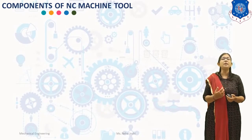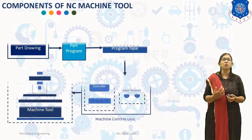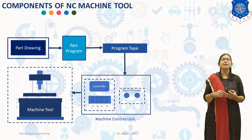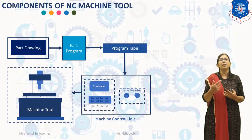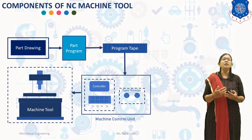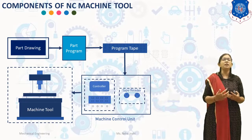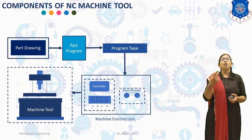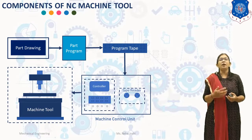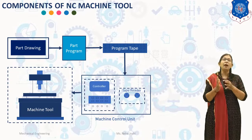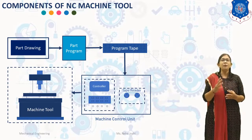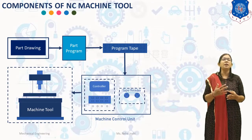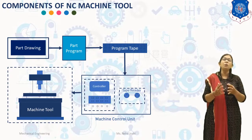Now we will discuss about the basic components of the NC/CNC machine tools. There are four basic components as you can see in the diagram. The first one is part drawing and part program. The second one is program tape. The third one is machine control unit, and the fourth one is machine tool. Using the part drawing and the cutting process parameters, the part program is written. The part program is a set of step-by-step instructions to the machine tool for carrying out the operations.